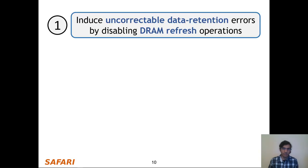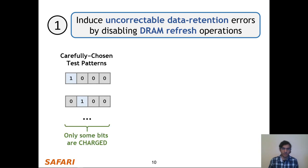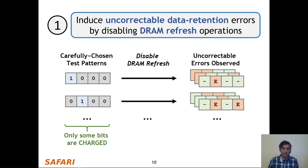In the first step, we start with a set of carefully chosen test patterns where only some bits are set to the charge state. Next, we disable DRAM refresh to induce uncorrectable data retention errors. Finally, we observe different error patterns for each test pattern across different ECC words throughout the DRAM chip. Note that these errors only occur in specific bit positions because not all bits are set to the charge state.